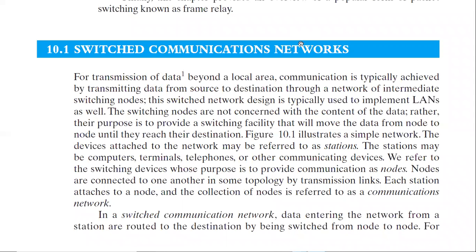First of all, this is a switched communication network. For transmission of data beyond a local area, communication is typically achieved by transmitting data from source to destination through a network of intermediate switching nodes. The switching nodes are not concerned with the content of the data; their purpose is to provide a switching facility that moves data from one node to another until it reaches its destination. The device attached to the network is referred to as a station, and the transmitting medium between points uses nodes.